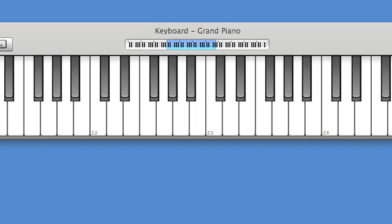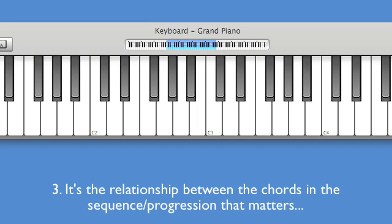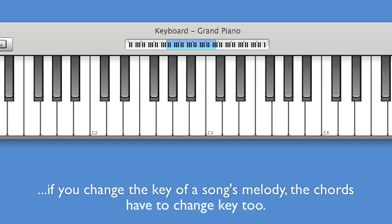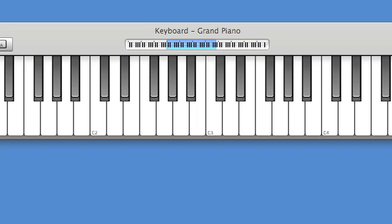Third takeaway: when it comes to chord progressions, it's the relationship between the chords that matters. You can take a melody that's in a major key and play it in any other major key, and the chords change key just like the melody does. It's the relationship between the chords that matters. In the next screencast, we're going to be talking about the natural chords of any given key and how you form them, moving a little bit deeper into the music theory side of things.